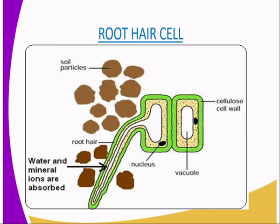As you can see, we have the soil particles in our diagram. The root hair cell is absorbing water from underneath the ground. The root hair cell is a specialized cell of the root epidermis. It has an extension — we can call it the projection. The root hair increases the surface area for absorption of water and mineral salts from the soil, which plants need for their growth.